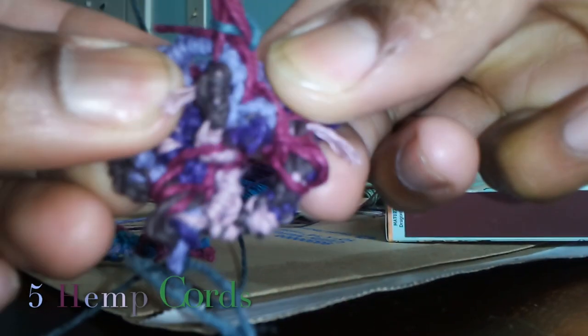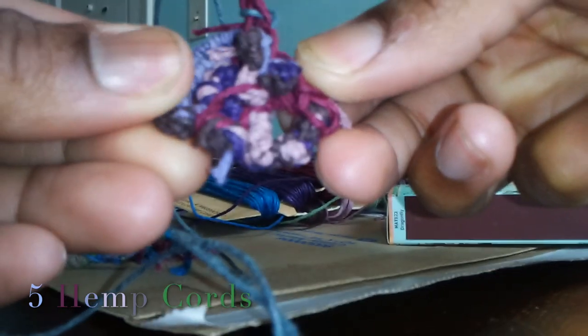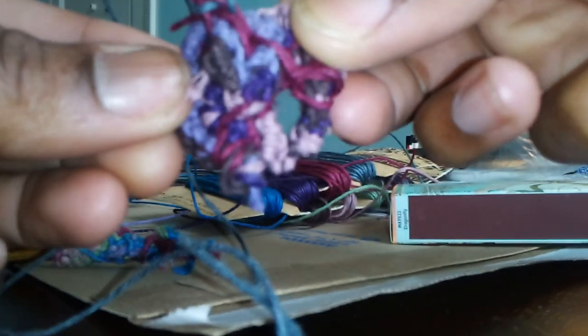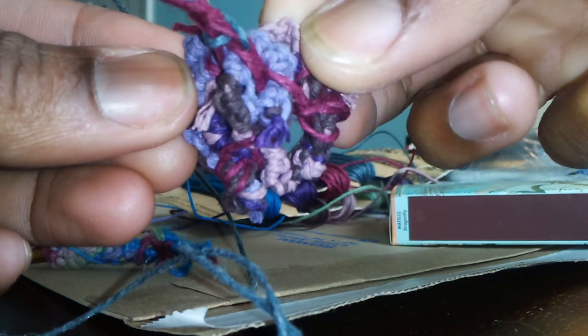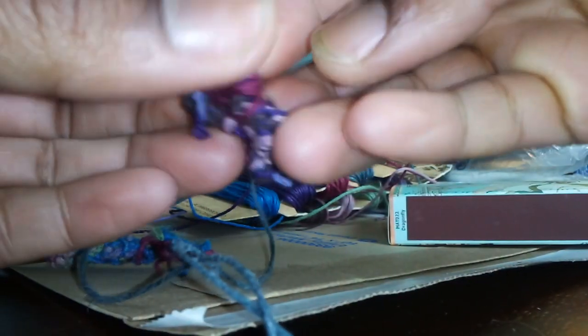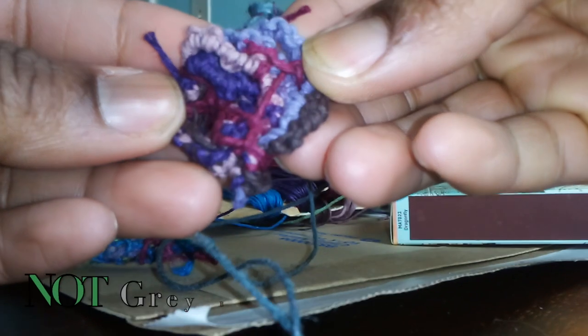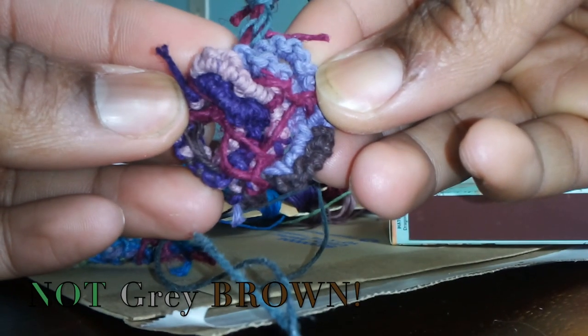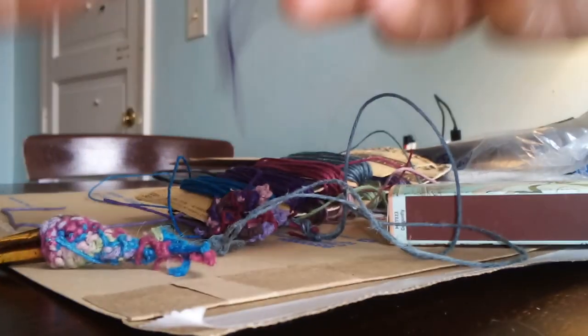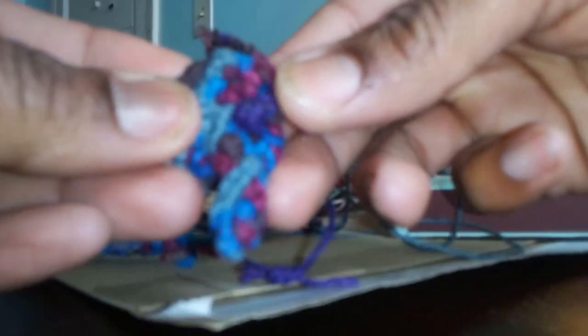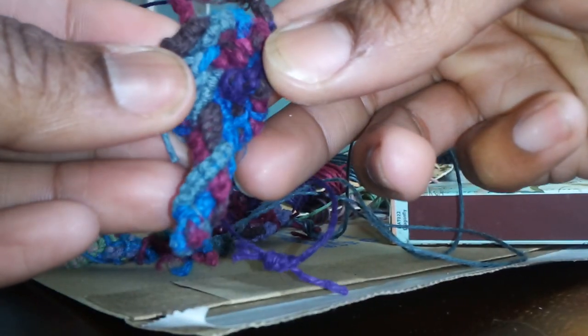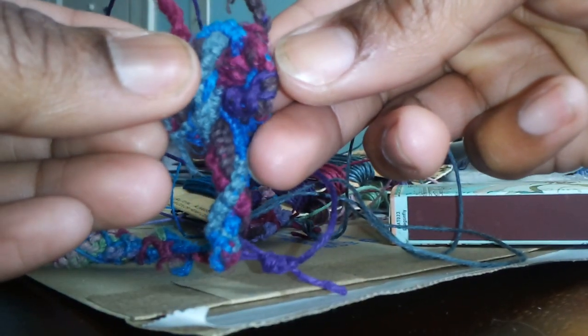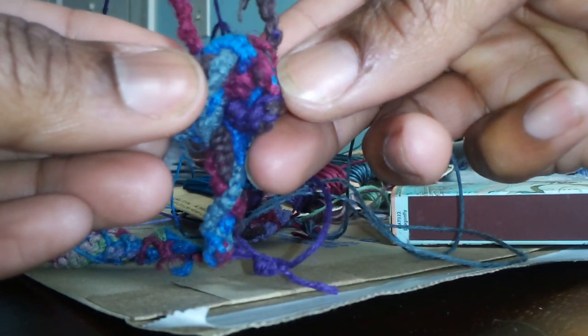This was three different cords. The purple, the pink, blue. No, not the blue. It has the light purple, the lavender, the dark purple, a pink, a burgundy, and a gray. This is another one. This was four different cords. Brown, blue, burgundy, purple.